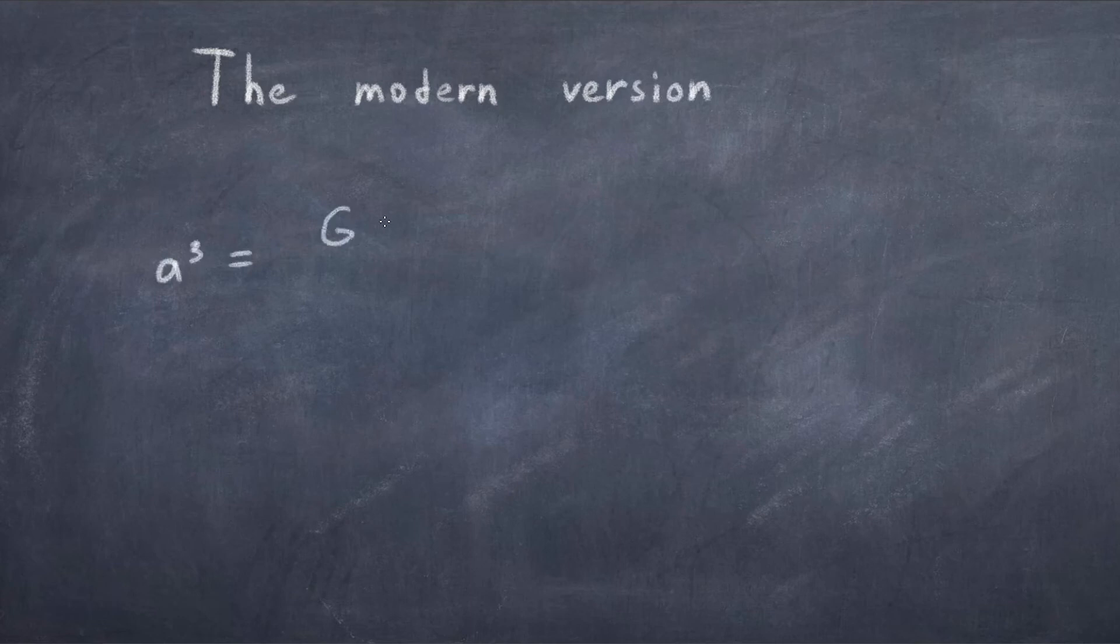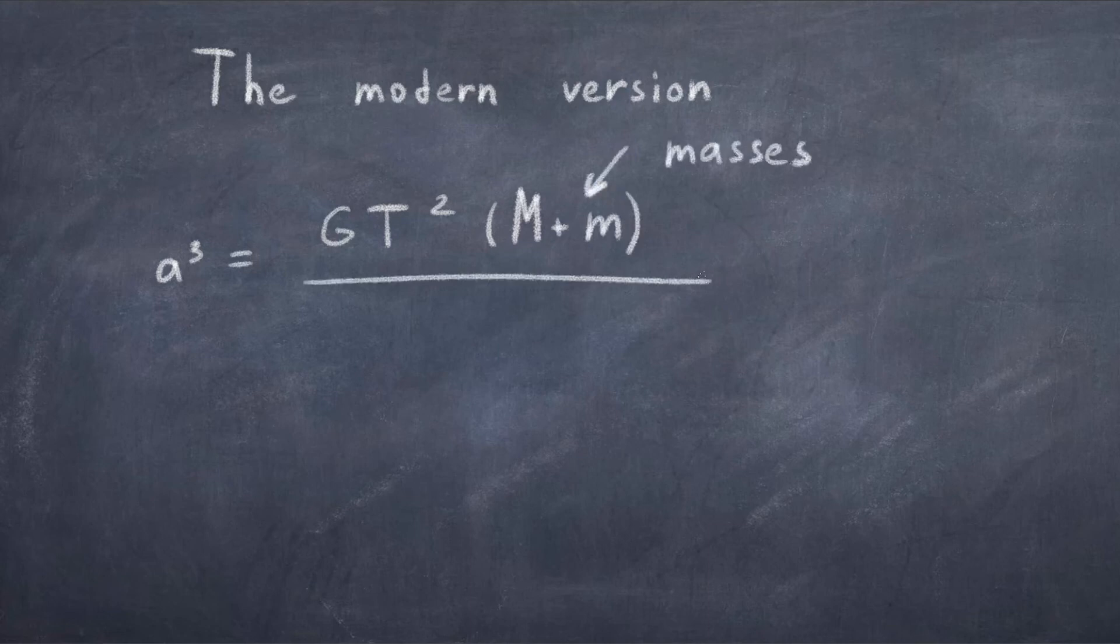With the help of Newton's law of gravitation, it became possible to find the exact formula of Kepler's third law. So now we can drop the proportionality sign and write it as a cubed equals G T squared times the sum of masses divided by 4 pi squared. And note that G is just the gravitational constant, the big M is the mass of the sun, and the small m is the mass of the planet that is orbiting the sun.